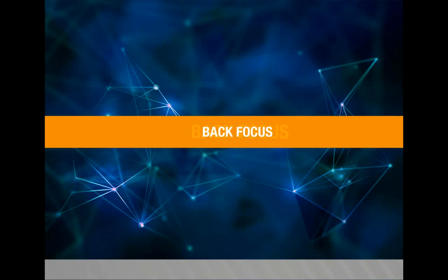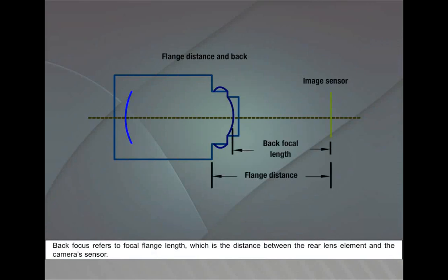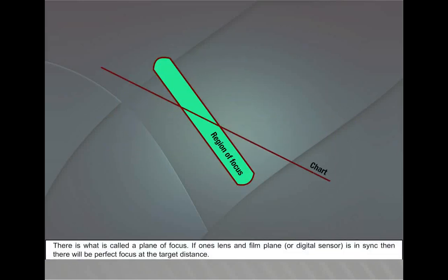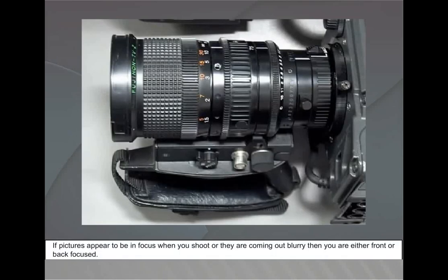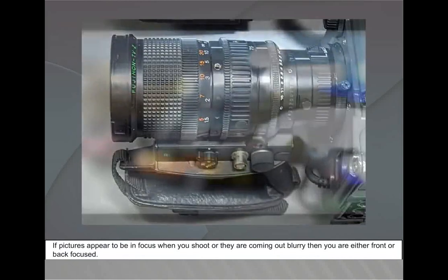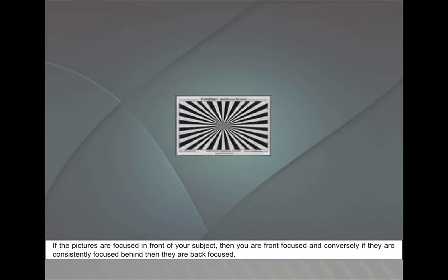Back focus refers to focal flange length — the distance between the rear lens element and the camera's sensor. There is what is called a plane of focus: if one's lens and film plane or digital sensor are in sync, then there will be perfect focus at the target distance. If pictures appear to be in focus when you shoot but they are coming out blurry, then you are either front or back focused. If the pictures are focused in front of your subject, you are front focused; if they are consistently focused behind, they are back focused.